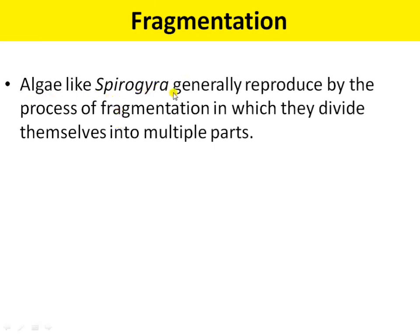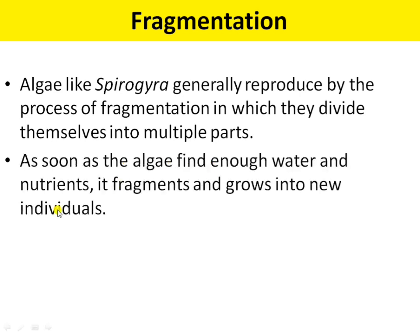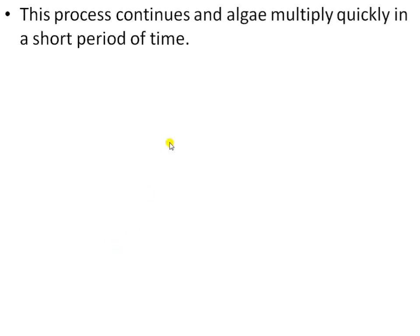Next is fragmentation. It is a type of asexual reproduction. Algae like spirogyra generally reproduce by the process of fragmentation. Spirogyra divides itself into multiple parts — fragmentation means the breaking of an organism into many parts. As soon as the algae find enough water and nutrients, they fragment and grow into new individuals. When favorable conditions are available, the fragments get separated and grow into new individual organisms. This process continues and algae multiply quickly in a short period of time.